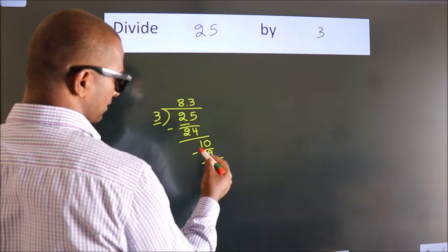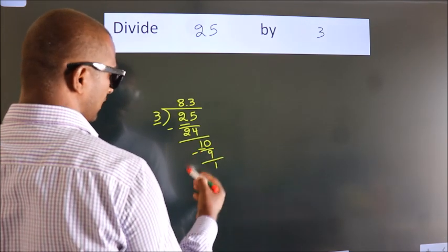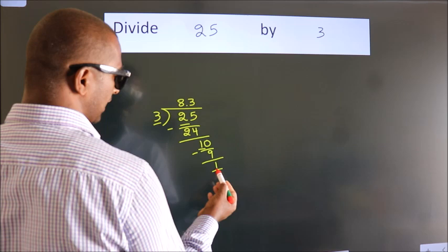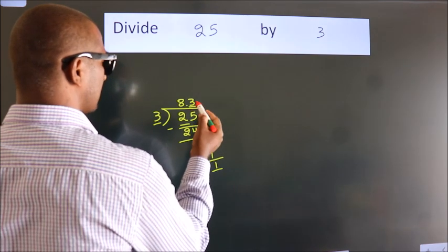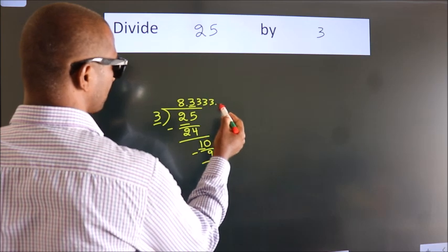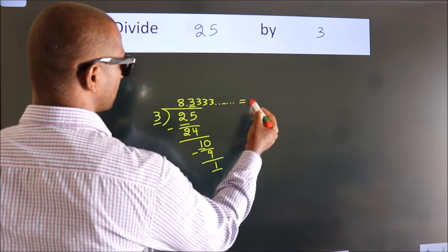Now you observe. We had 1 here, and we got 1 again. That means this number keep on repeating. So this is our quotient.